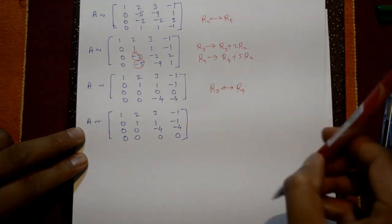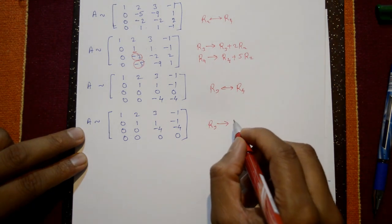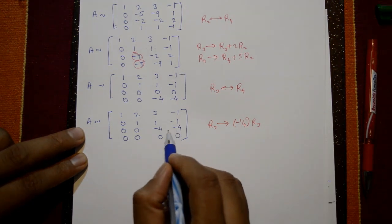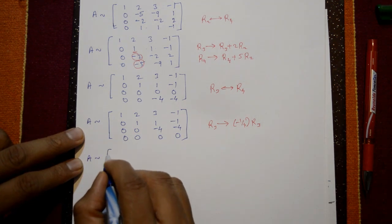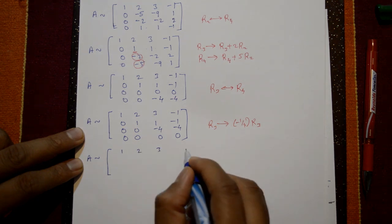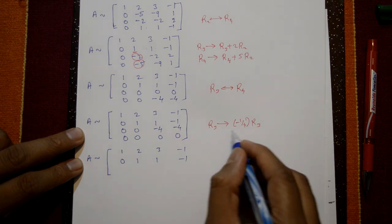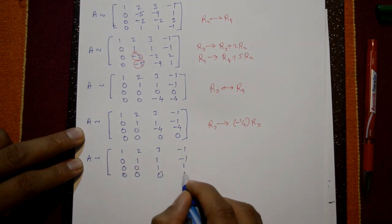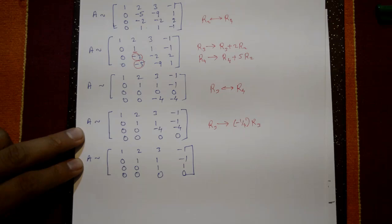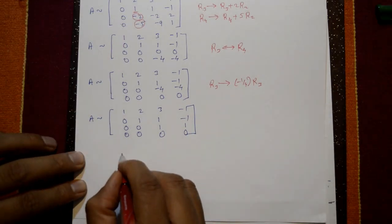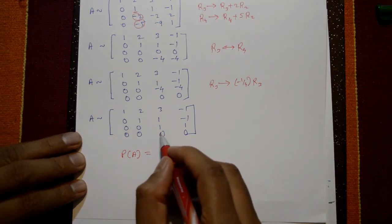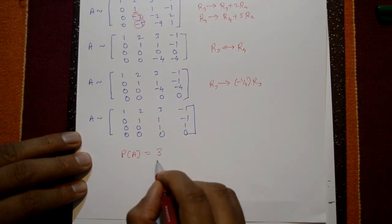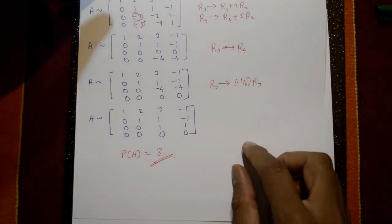We scale R3 by -1/4 (divide by -4), giving the equivalent matrix: row 1: 1, 2, 3, -1; row 2: same; row 3: 0, 0, 1, 1; row 4: all zeros. This is echelon form. The rank of the matrix is the number of non-zero rows, which is 3.